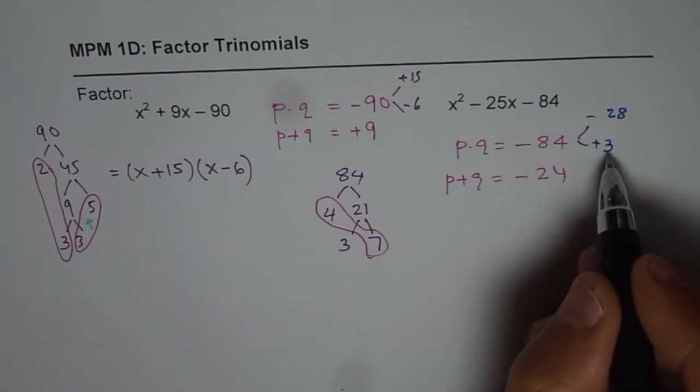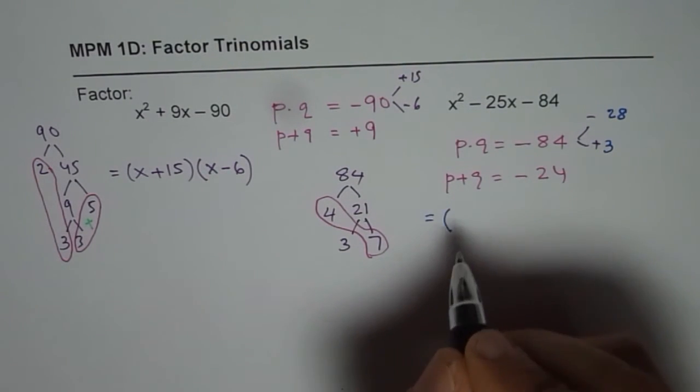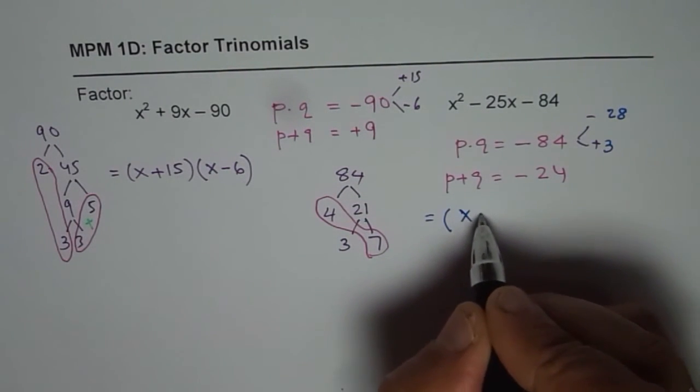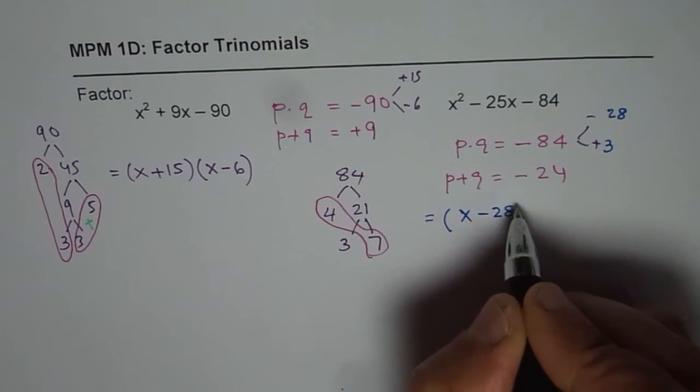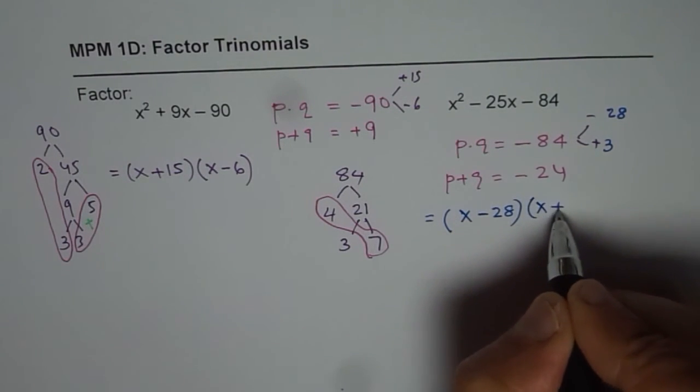And once we have the numbers we can factor and we can write down our answer. Which is x minus 28 times x plus 3.